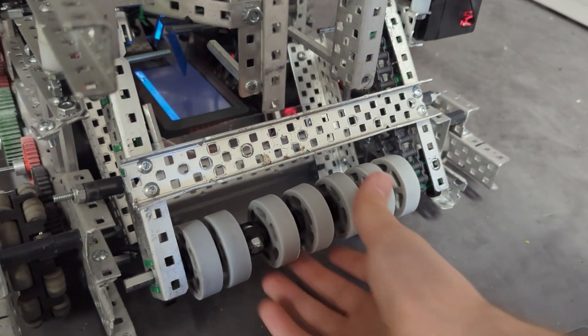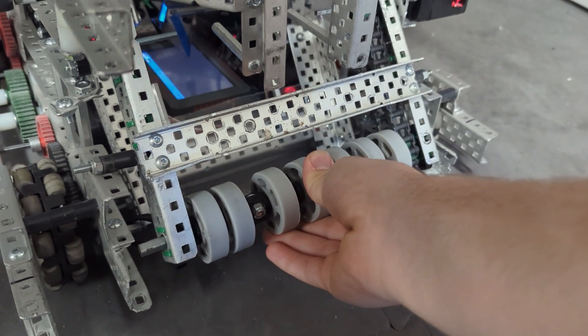Now when you see a VEX high stakes intake, it can be made up of two different pieces. The first part of the intake, as you might guess, is this roller right here. That's what grabs the ring, that's what puts it up into your conveyor.